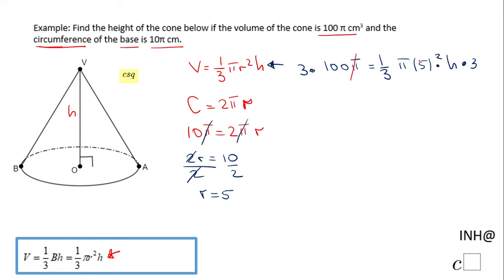So we have 3 times 100, that is 300. And this one-third and these three cancel out. And here we have these 5 squared that will be 25, and just h. So the last step to solve for h will be to divide by 25.